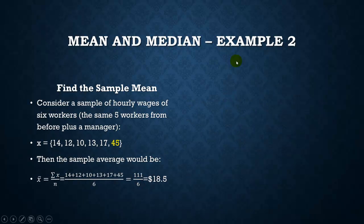So let's consider another example. Same data set, but I added the number 45. Maybe I threw in a manager into this sample here. So in this case, our sample mean would be the sum of all of our x's divided by n, so it's the same sum as before, but I'm adding 45 to it, which gives me a total of 111. And this time I'm dividing by 6, because there's 6 people. That brings the average to $18.50.